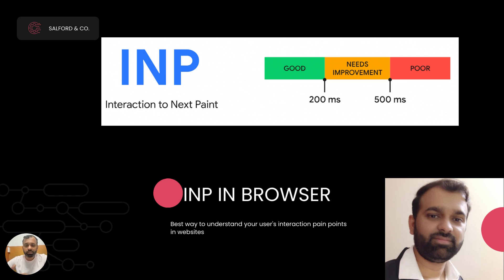To start with, a good INP score is under 200 milliseconds. From 200 to 500 milliseconds it needs improvement, and 500 milliseconds and above is poor. You should check your websites to understand where each interaction on your page lands. To test it, you can use PageSpeed Insights, WebPageTest, or any other online tool that helps you understand your Core Web Vitals in detail.